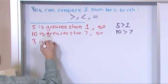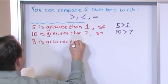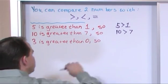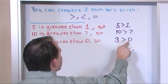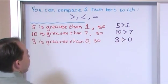Three is greater than zero. So three is greater than zero. It always points to the smaller number. The opened end of these arrows are always next to the larger numbers that you're...